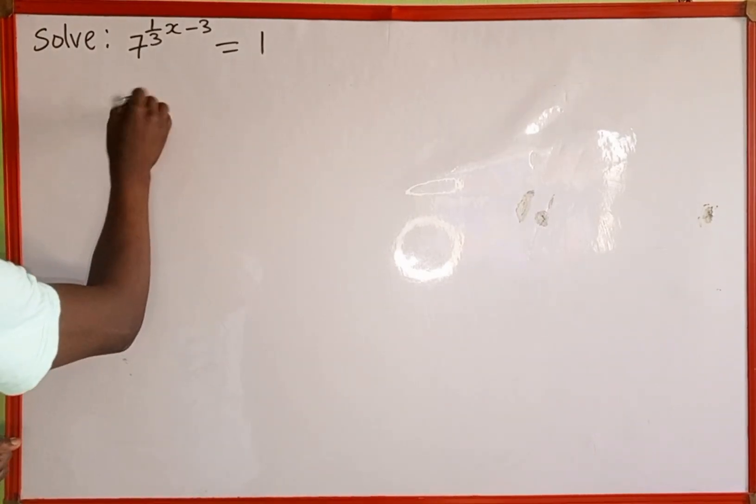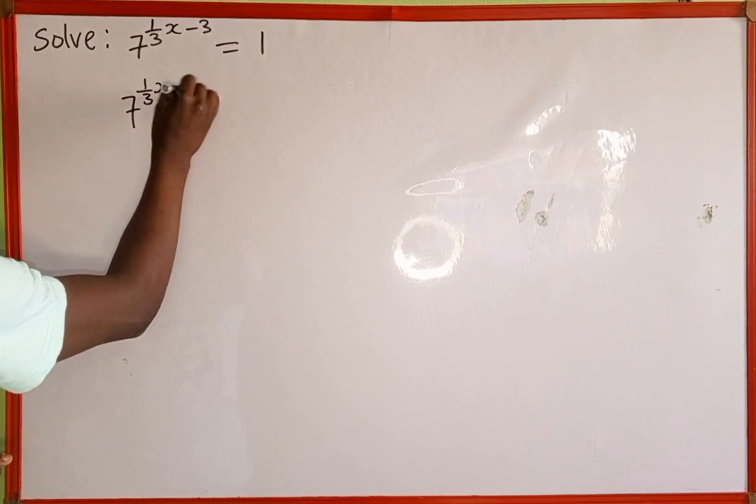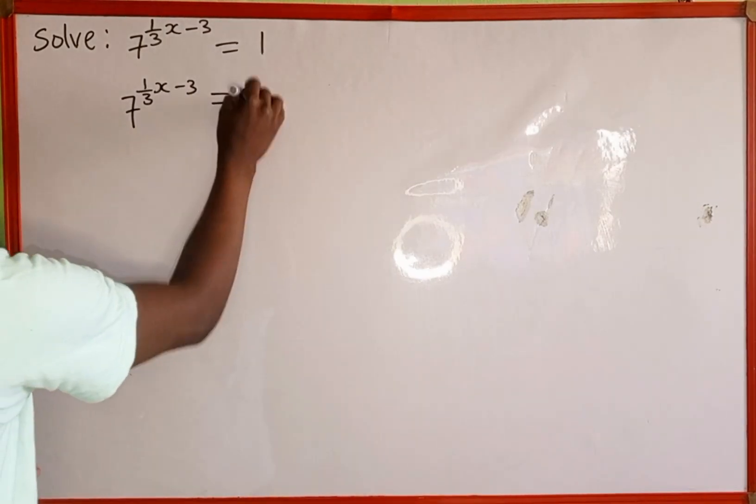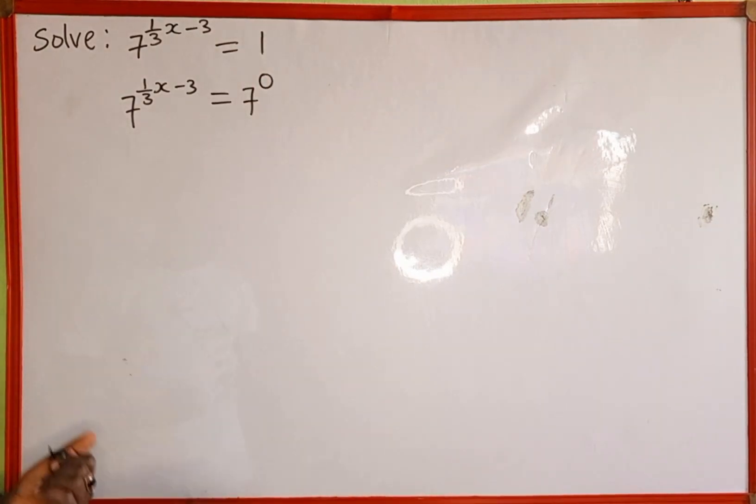So this is going to be 7 raised to the power of 1 over 3x minus 3, which is equal to 7 raised to the power of 0. So this is the same as 1.